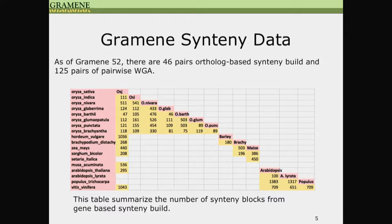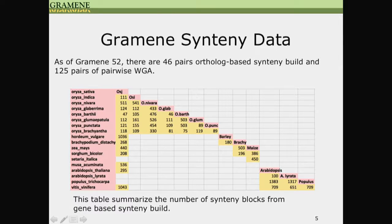Up until the most recent release, Gramene release 52, we have conducted a gene-based synteny build across 46 pairs of genomes and whole genome alignments across 125 pairs of genomes. This table summarizes the gene-based synteny build from Gramene and the total number of syntenic blocks calculated from each pair. All these data are stored in the Gramene database and can be visualized from the Gramene genome browser.